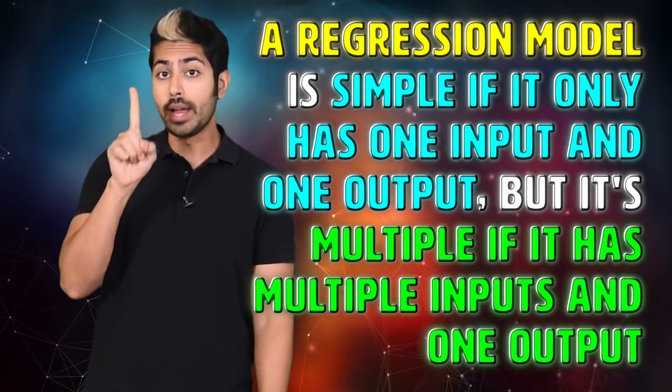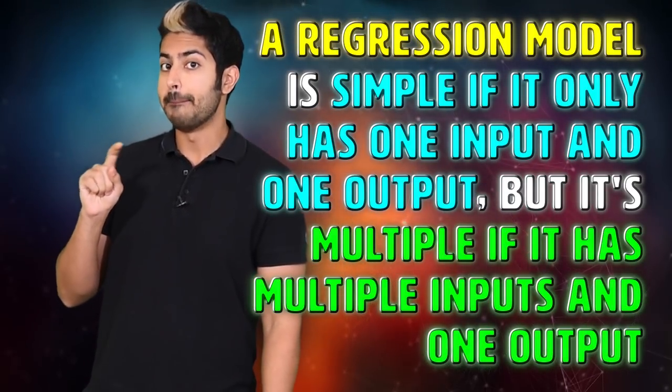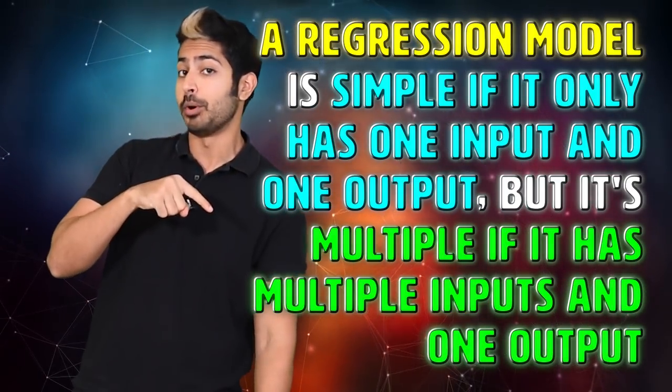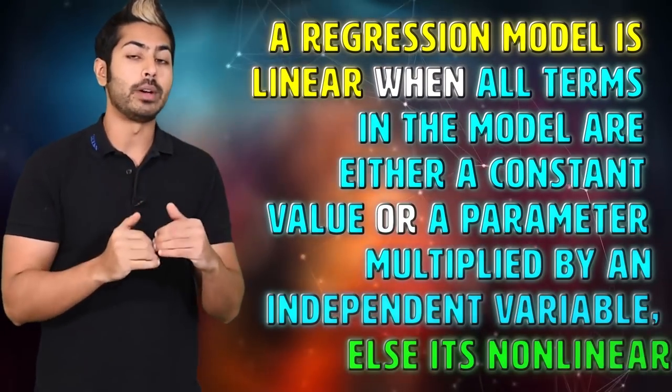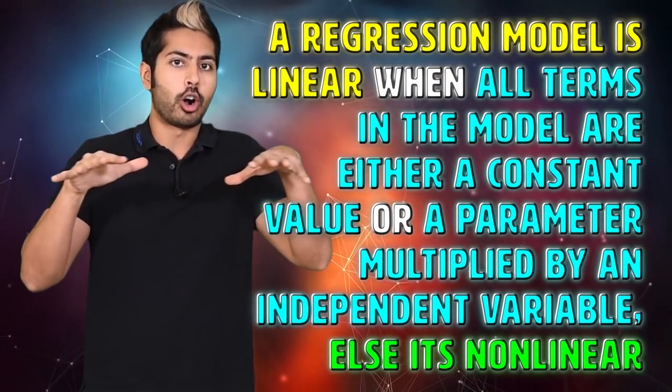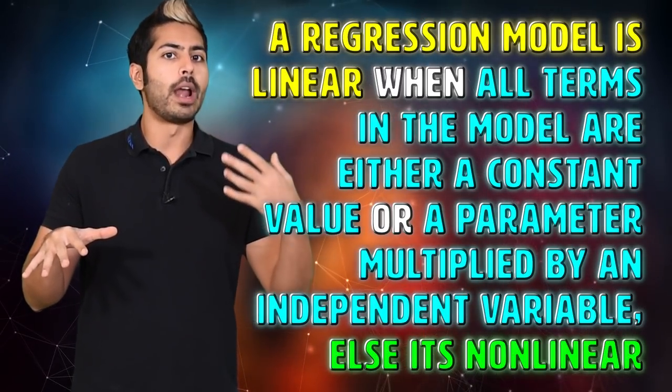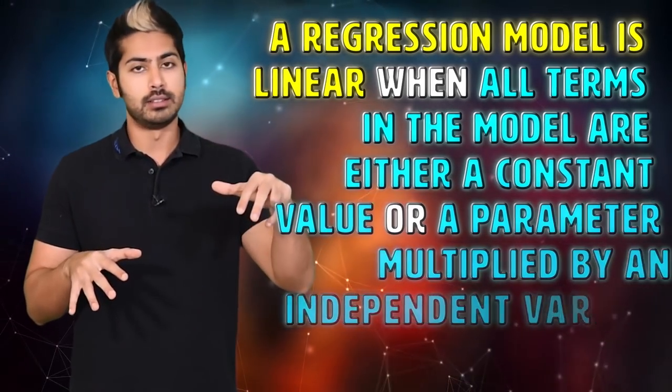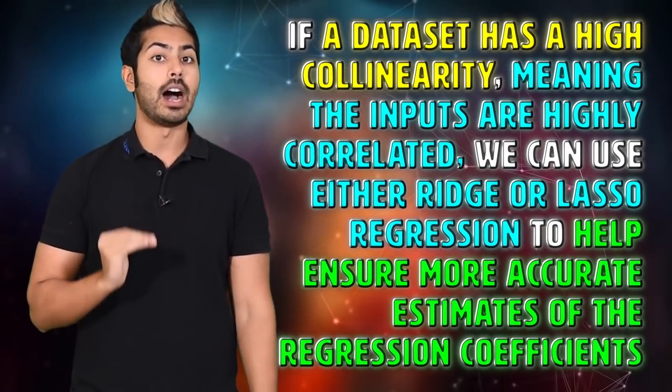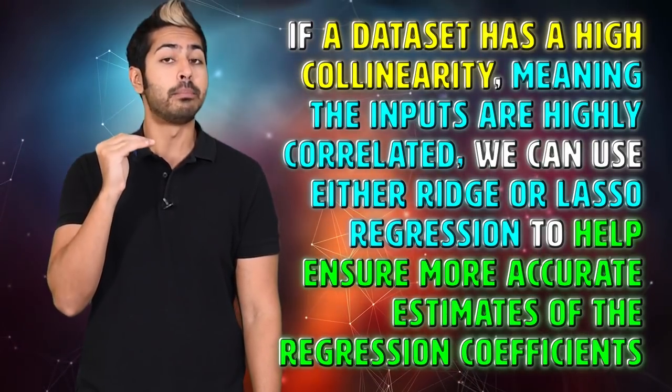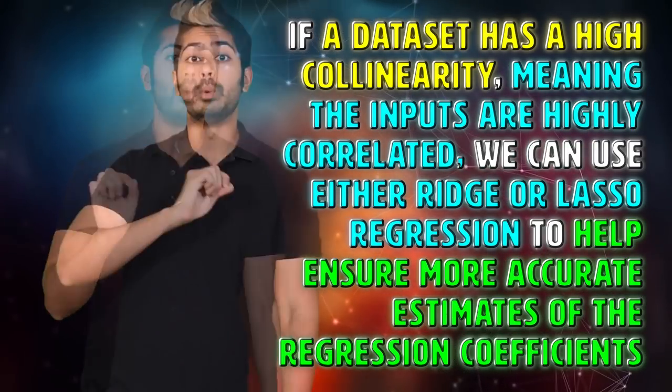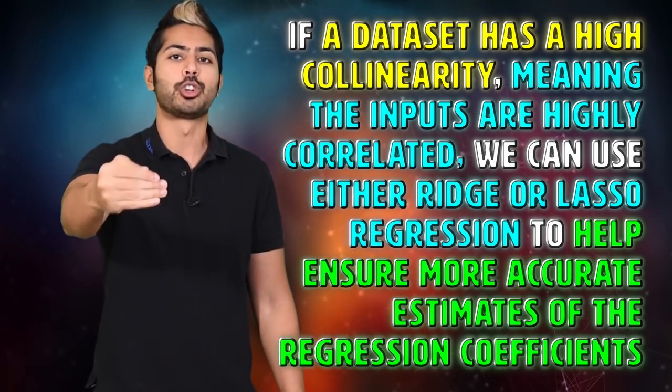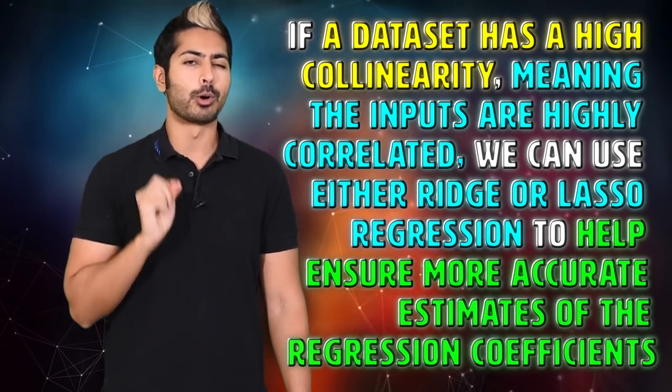Luckily, there are only three points to remember from this video. A regression model is simple if it has only one input and one output, but it's multiple if it has multiple inputs and one output. A regression model is linear when all the terms in the model are either a constant value or a parameter multiplied by an independent variable, else it's nonlinear. Lastly, if a data set has a high collinearity, meaning the inputs are highly correlated, we can use either ridge or lasso regression to help ensure more accurate estimates of the regression coefficients.